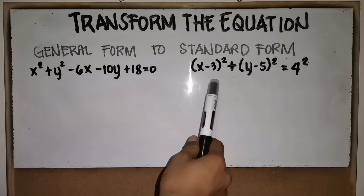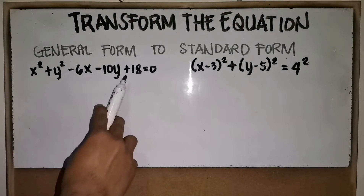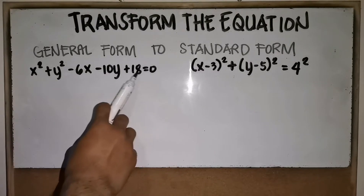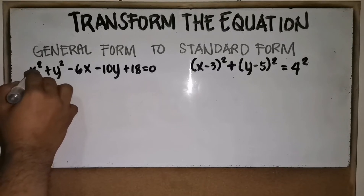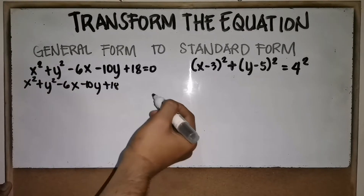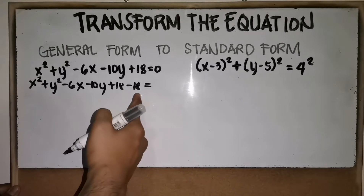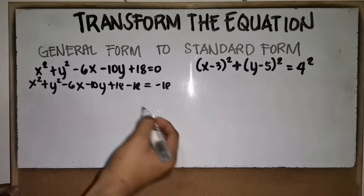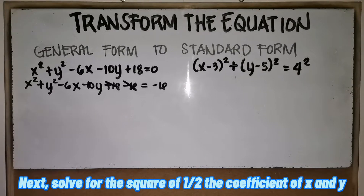We should transform this into standard form. The first step is to write the given equation. Next, we will use the Addition Property of Equality (APE) to transfer 18 to the other side. To cancel out the constant on the left side, copy everything and put negative 18 on both sides. What you have done on the left side should also be done on the right side. You can now cancel out positive 18.